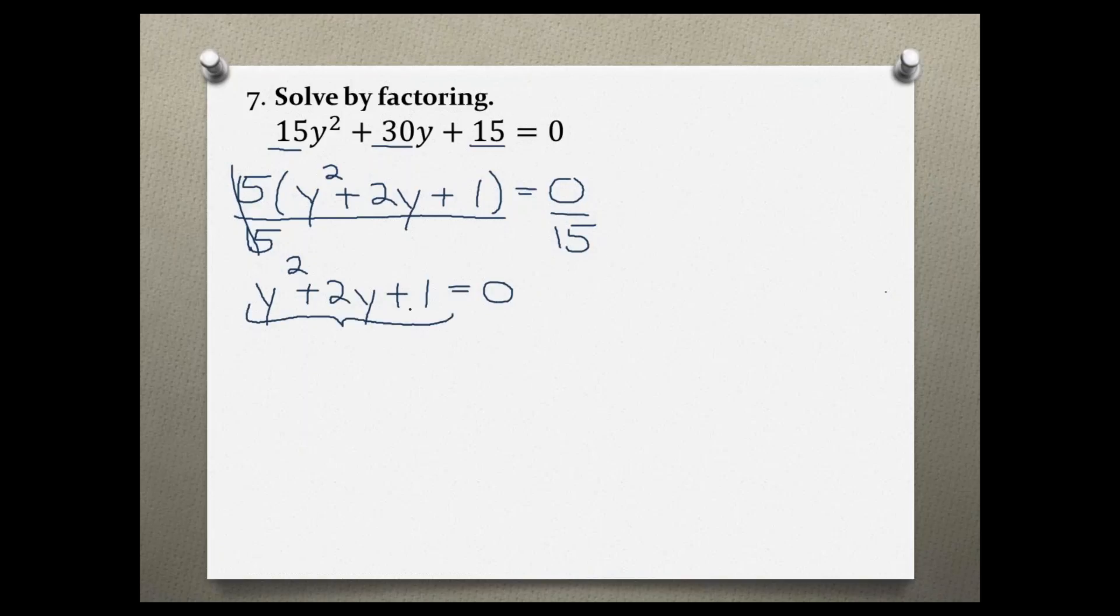So now I have a trinomial with a coefficient of 1, and I can use my Colombian method. I'm square rooting the first term, which is y and y. I'm bringing down my first sign, multiplying the signs together to give me the second sign, so positive times positive is positive. Then I'm looking at this third term's number, which is 1, and I have to find the factors of 1.